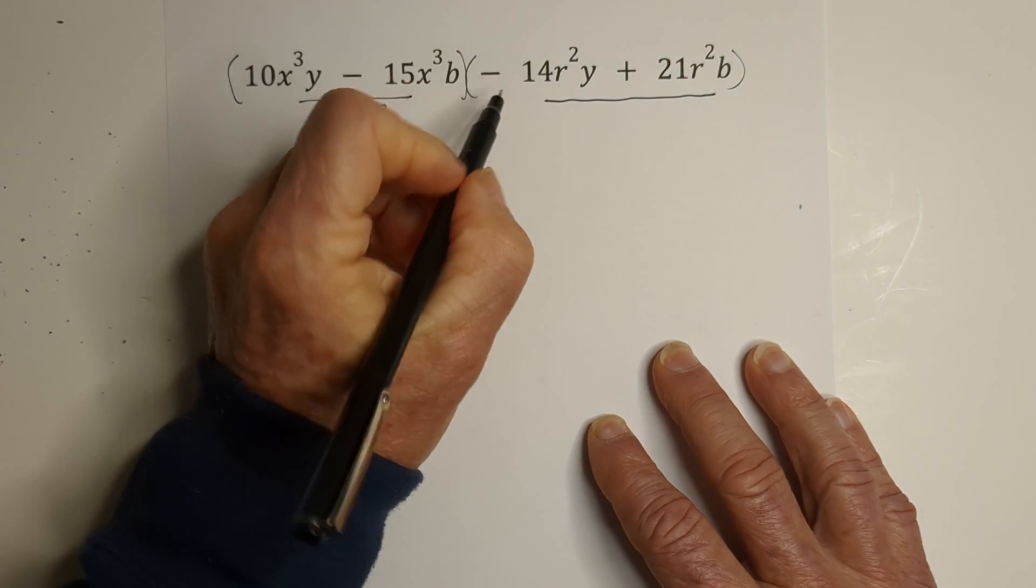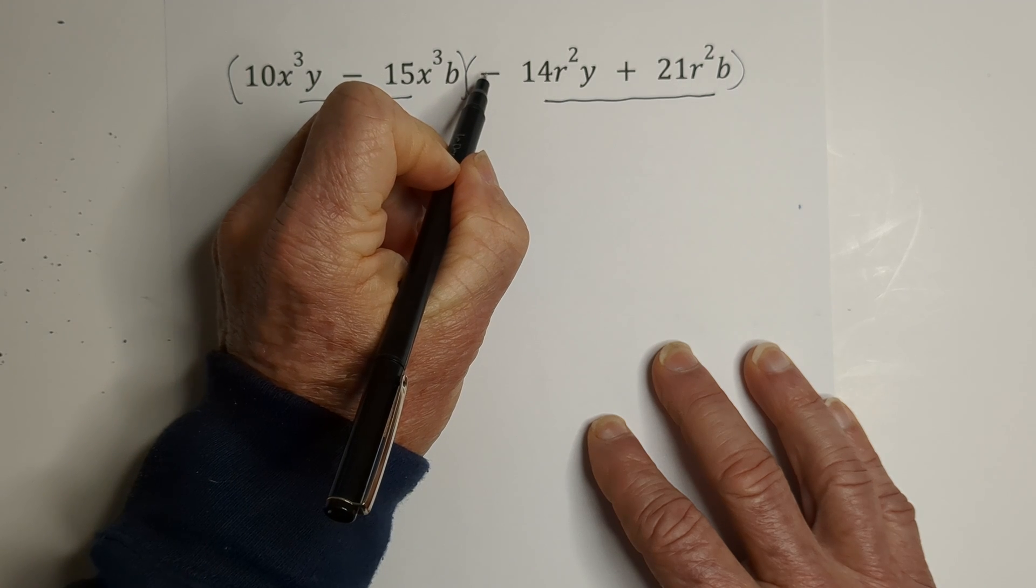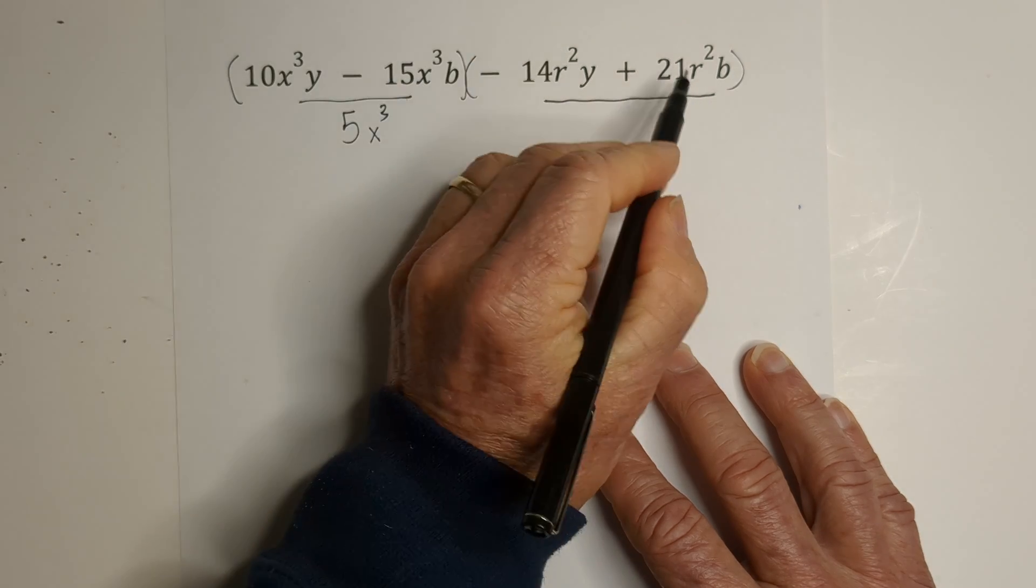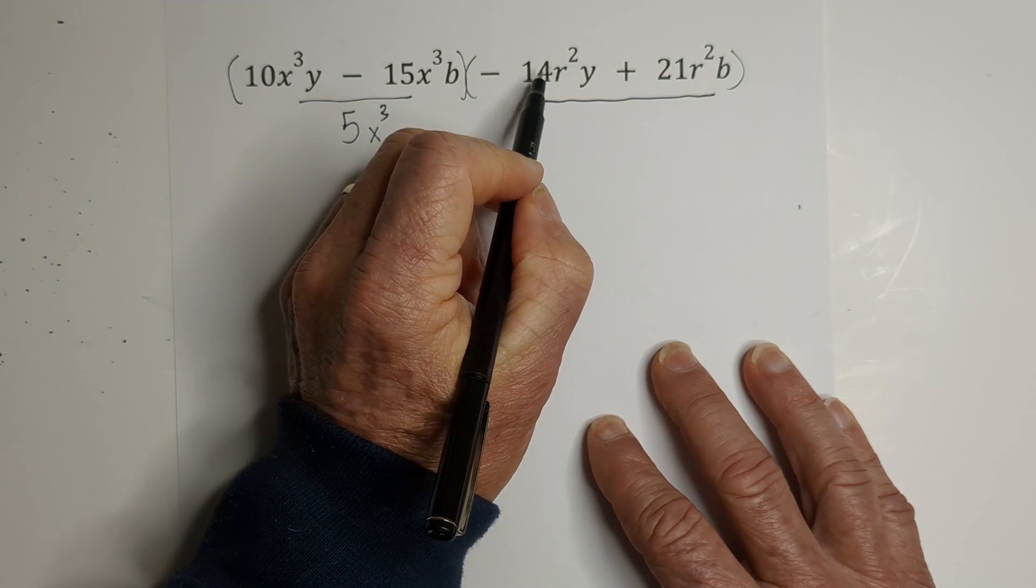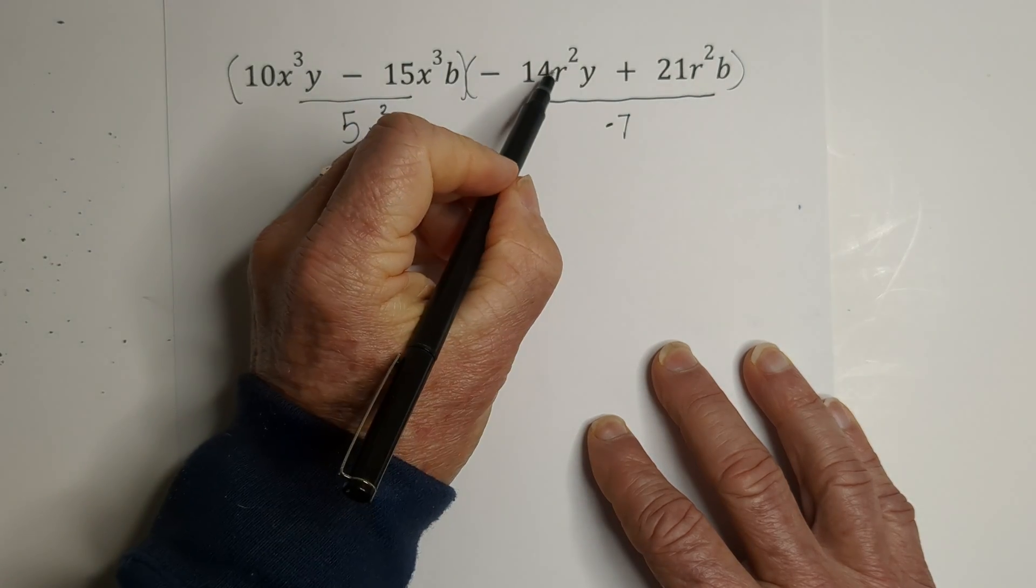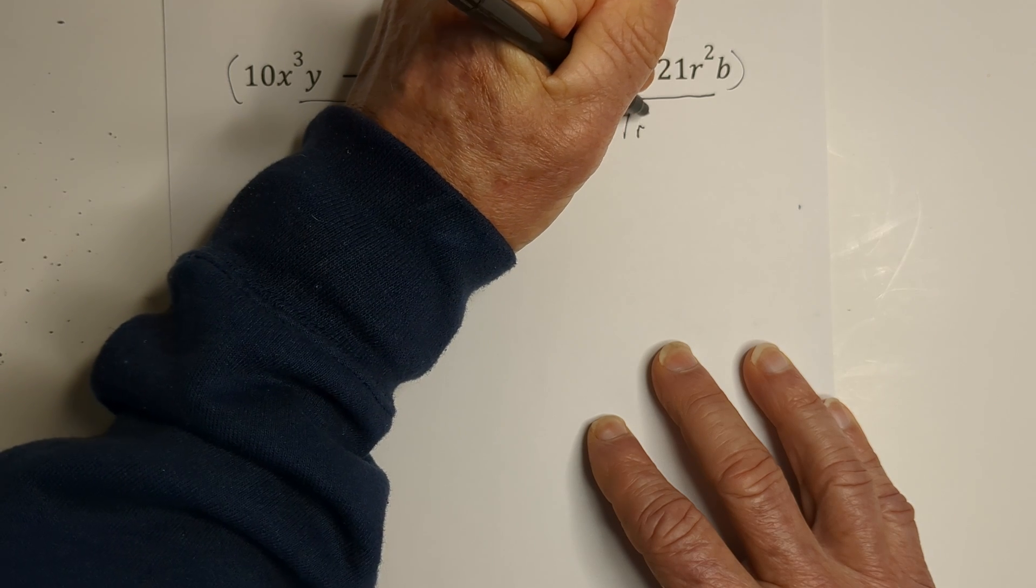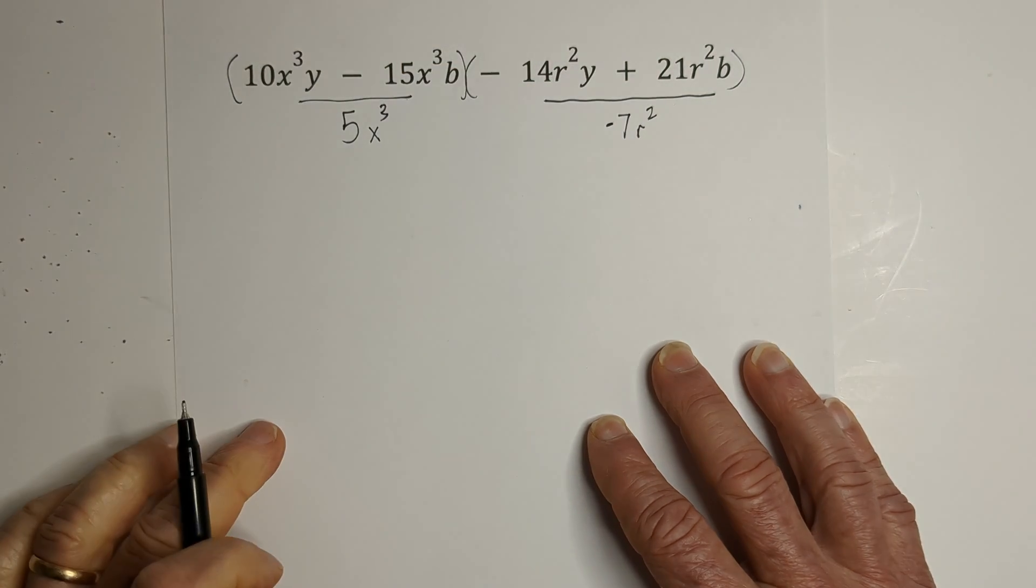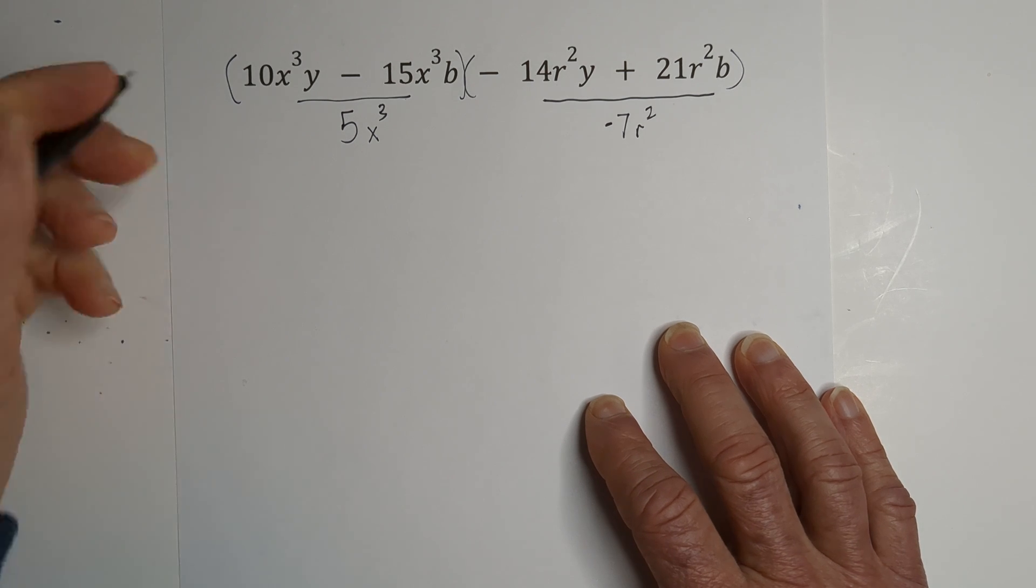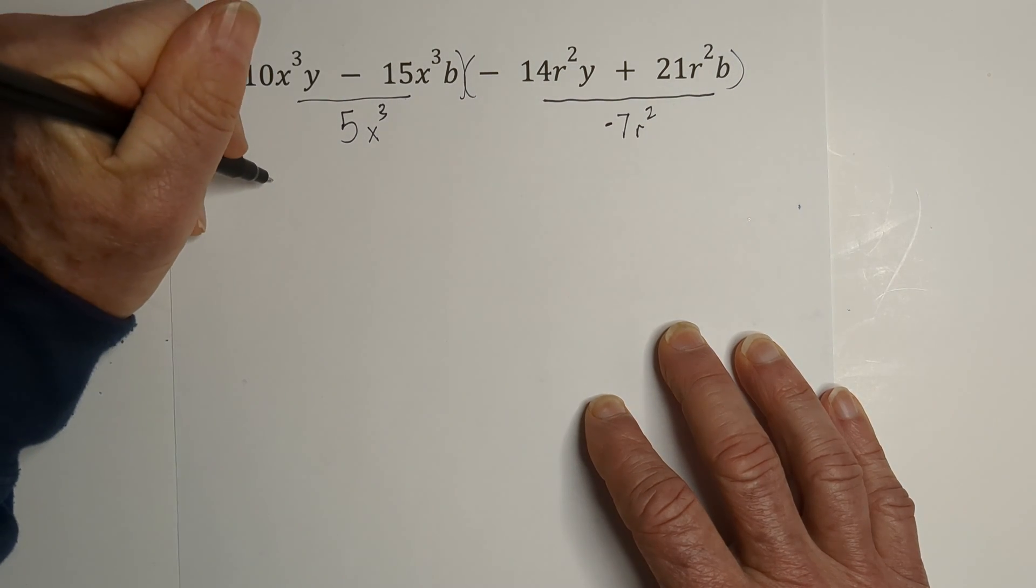Now remember, the GCF of this group is going to be a negative number. So we have two constants. The GCF of 14 and 21 is 7. It's going to be negative 7. We have r's squared. And that looks like we have the GCF of that. Now what we're going to do is we're going to write the GCF out front.